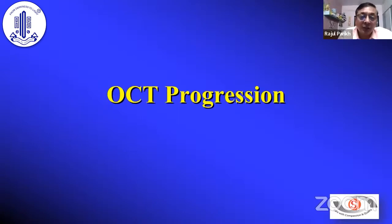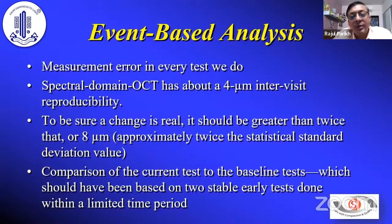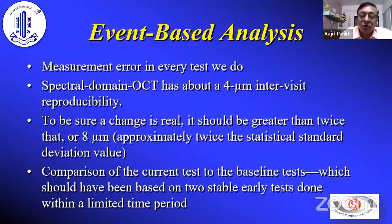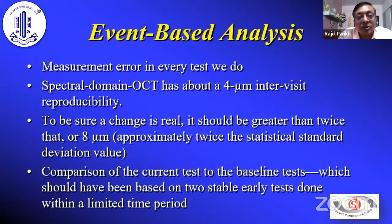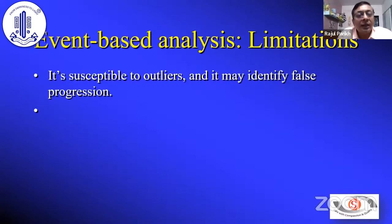To diagnose progression on OCT, there are event-based analysis and trend-based analysis. Event-based analysis uses two baselines, and from the third imaging you can start detecting progression — that's the advantage. But there's variability and measurement error involved, and it uses only limited fields. Event-based analysis picks up progression much earlier than trend-based analysis, but is susceptible to outliers and may identify false progression. Combining both event and trend analysis is always better.